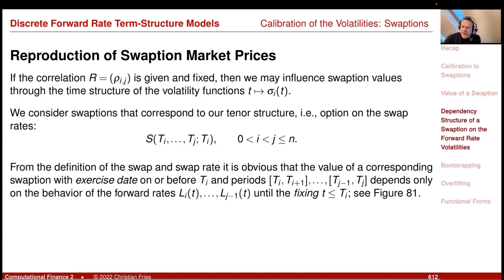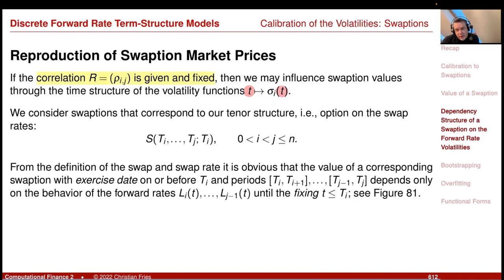You might think: a swaption has two parameters i and j, so maybe it's nice to choose the correlation to calibrate to swaptions. Then we would have a nice hierarchy: given the initial value, choose the volatilities to match the caplets; given the initial value and volatility, choose the correlation to match the swaptions. However, we will not do this because there is an even more powerful trick: we can choose the time dependency of the volatility function to calibrate this option.